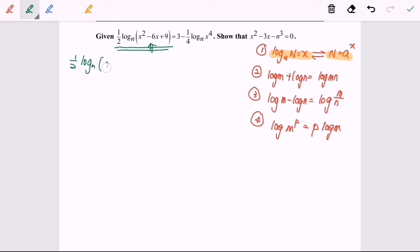So x minus 3 squared equals 3 minus 1 over 4 log base n x to the power of 4. My first step is to factorize or simplify x squared minus 6x plus 9.